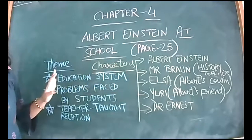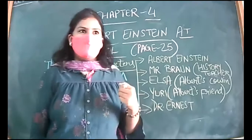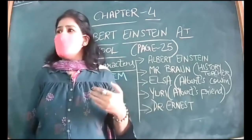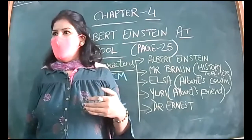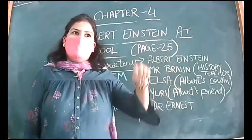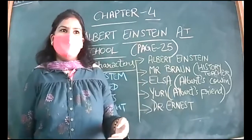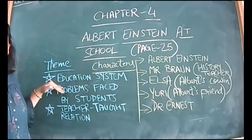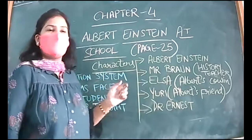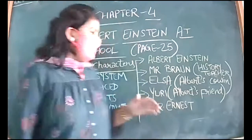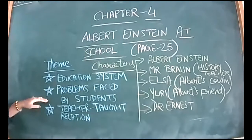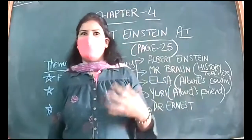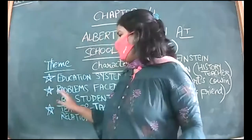Einstein never liked history because he was not interested in cramming facts. He wanted to know why something happened, how to stop it — rather than just when a battle occurred. According to Albert Einstein, education should focus on reasons and ideas. So the foremost theme of this chapter is the rigid education system where you are supposed to cram facts.